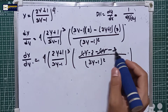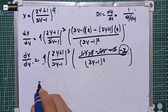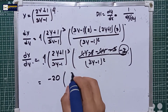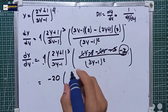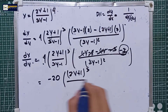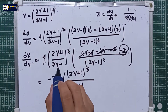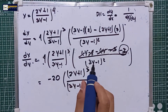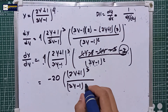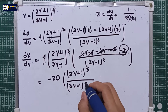Negative 2 plus negative 3 is equal to negative 5. So negative 5 multiplied by 4 is equal to negative 20. That gives negative 20 times (2y + 1) cubed over (3y − 1) cubed, multiplied by (3y − 1) squared, which equals (3y − 1) raised to the 5th power.